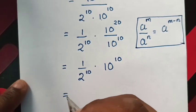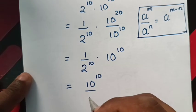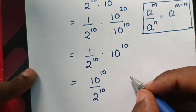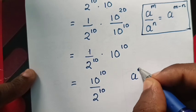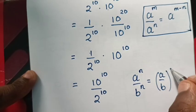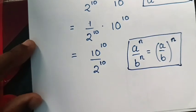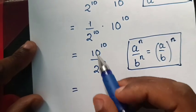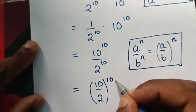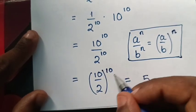So it will be equal to 1 times 10 power 10 is 10 power 10 over 2 power 10. Now we will apply exponential rule that a power n over b power n is equal to a over b bracket power n. So same power 10 is equal to 10 divided by 2 is 5, so 5 power 10.